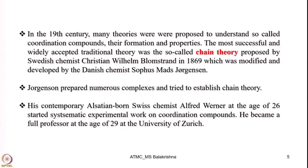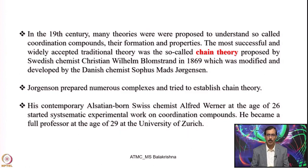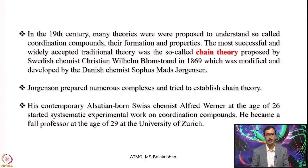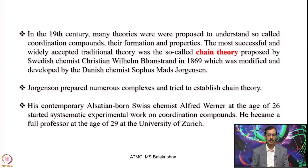In the 19th century, during the period when Mendeleev proposed the periodic table, many theories were proposed to understand so-called coordination compounds and their formation and properties. The most successful and widely accepted traditional theory at that time was the chain theory, proposed by Swedish chemist Blomstrand in 1869, which was modified and developed by Danish chemist Sophus Mads Jorgensen.